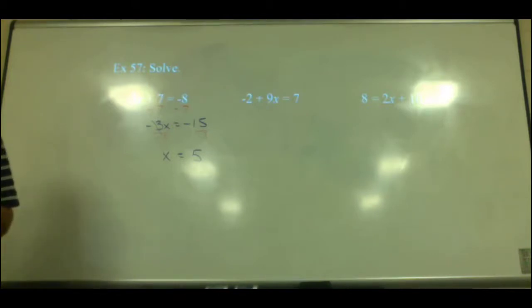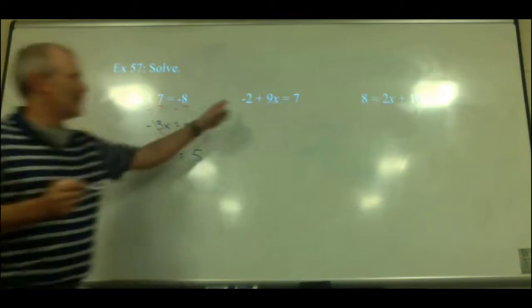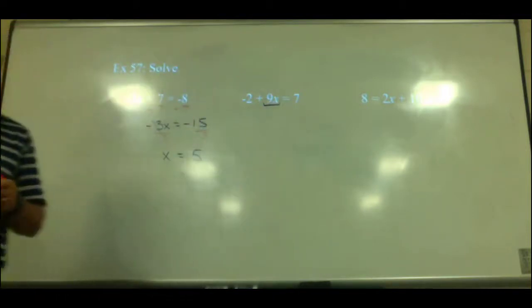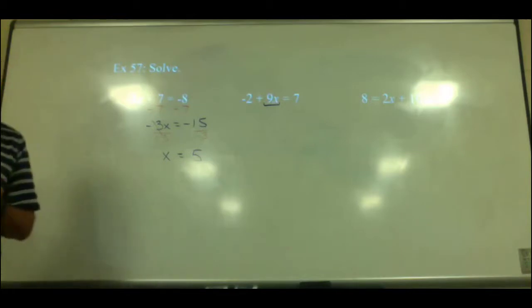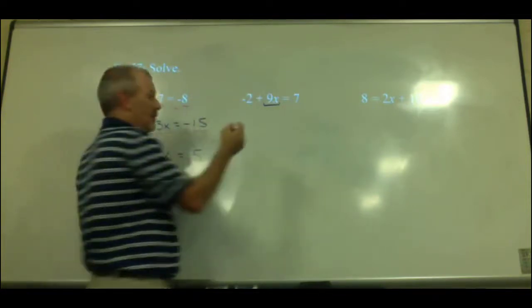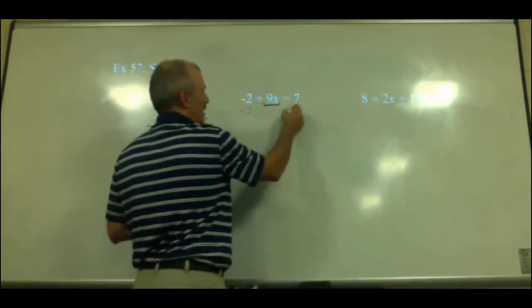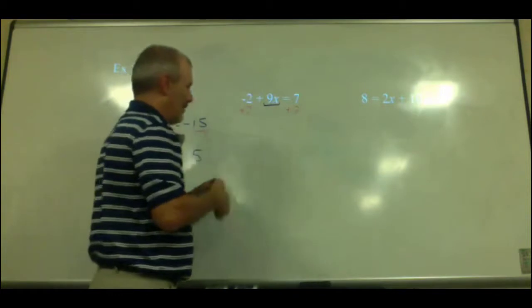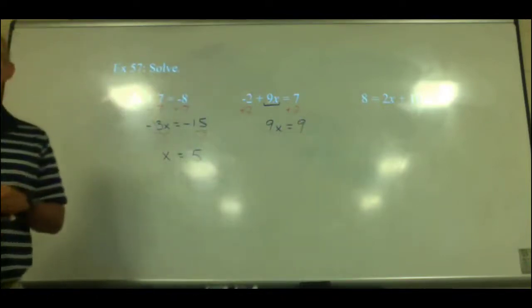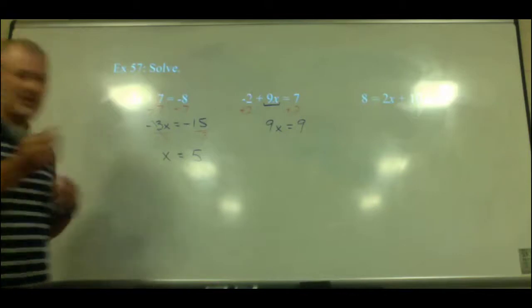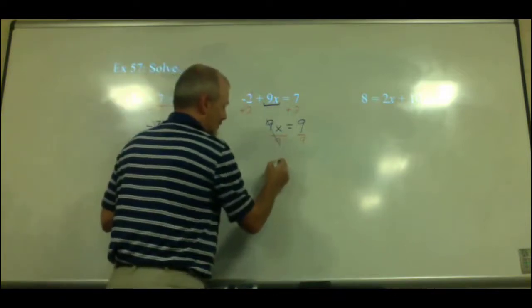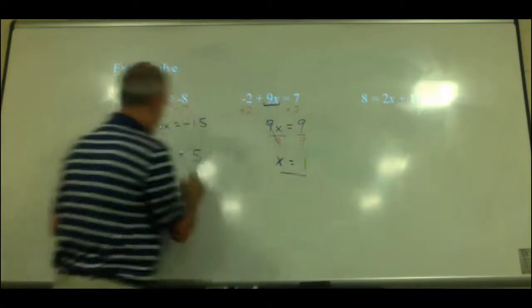Next one: what two numbers are we getting rid of? Negative 2 and 9. Which is grouped with x? The 9. To get rid of the negative 2 first, we add 2 — notice it is negative 2, so to cancel it we add. This cancels, leaving 9x on the left and 9 on the right. Divide by 9 on both sides; the 9s cancel out to 1, giving 1x equals 1.